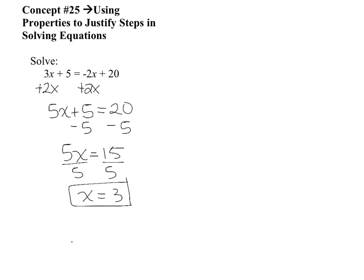If you solved this equation correctly you should have gotten that x is equal to 3. Looking at how I did it: I added 2x to both sides to collect variables first — the 2x on the right cancels out. Your other option would be to subtract 3x from both sides, which would leave negatives on the right hand side. Then I subtracted 5 from both sides, the 5s on the left cancel out, leaving 5x equals 15. Then divide both sides by 5 and you get x equals 3.